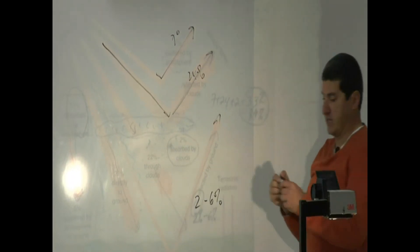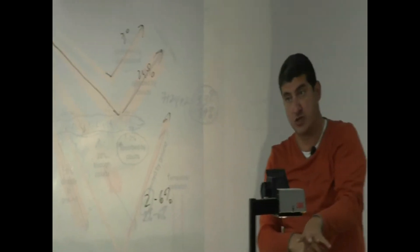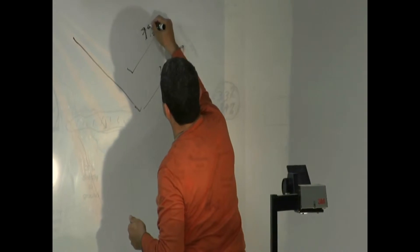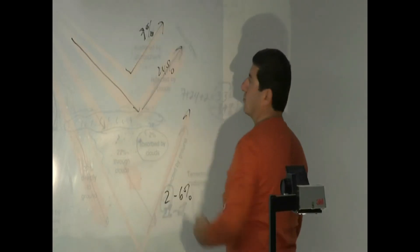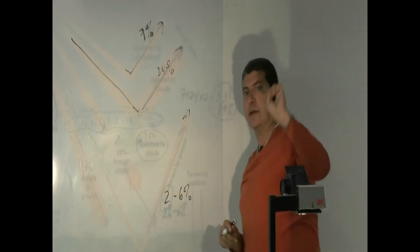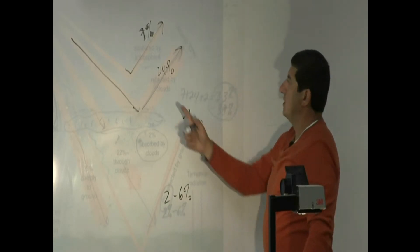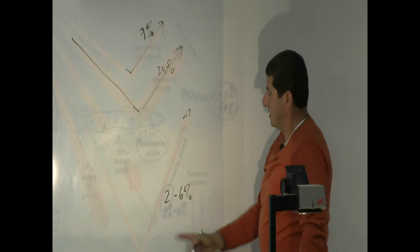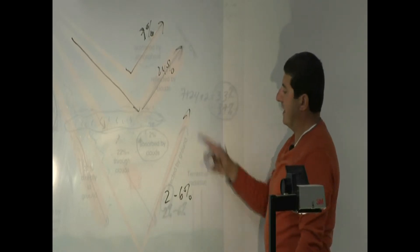So basically here's what's happening. Out of all the energy coming to the earth, 7% of it is sent back roughly by the atmosphere. The atmosphere reflects it. 24% is sent back by the clouds. About 2 to 6% sent back by the ground.